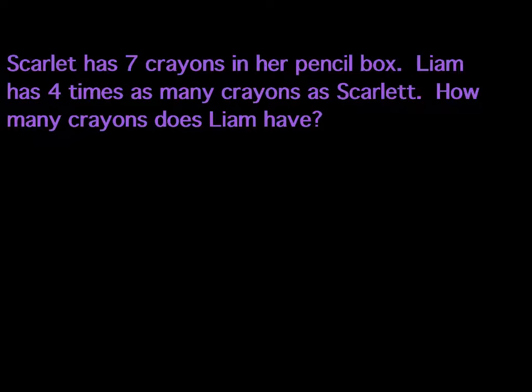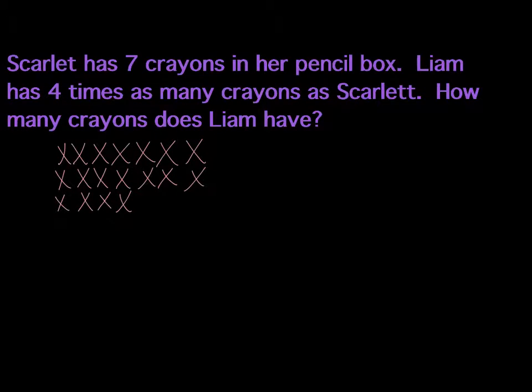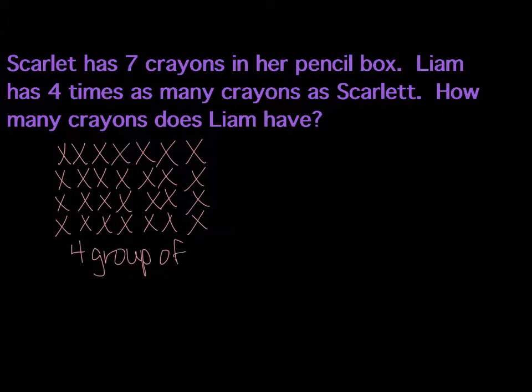We could draw an array, and of course put our 7, 1, 2, 3, 4, 5, 6, 7, and we're going to do that 4 times. Okay, so this would represent 4 groups of 7, which of course equals 28. I could also write that as a multiplication problem. 4 times 7 equals 28.